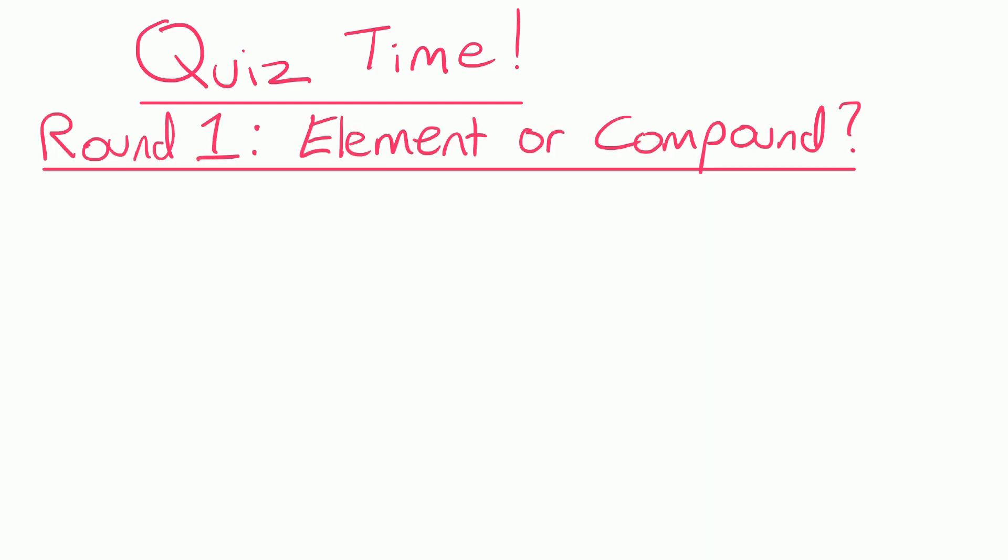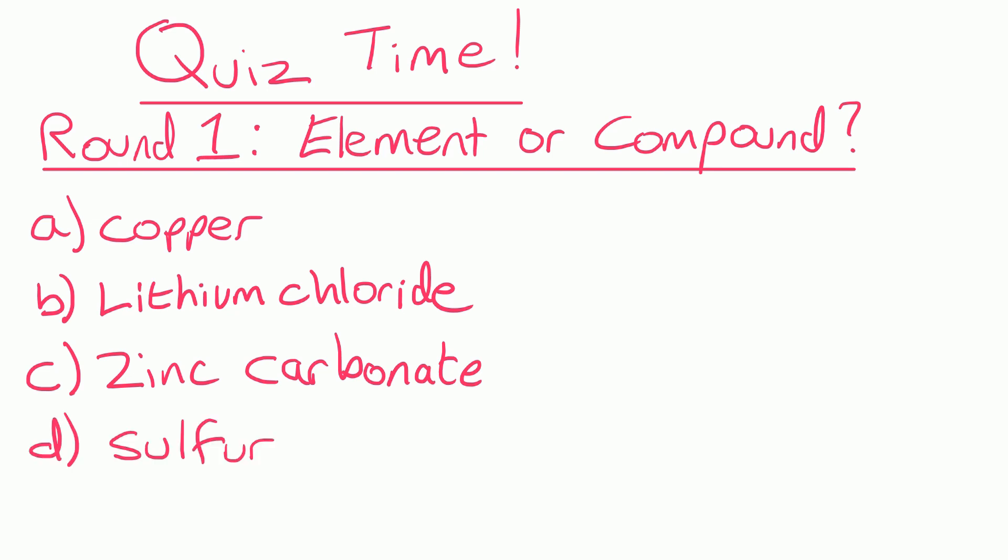Round one is element or compound. For the following, say if they are an element or a compound. Pause the video for a minute, write down what you think the answer is, then see how you get on.